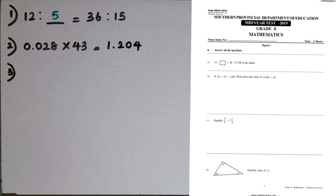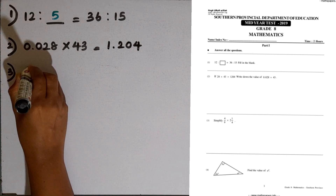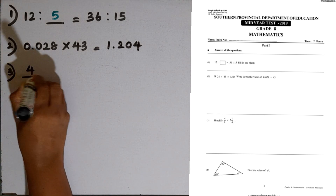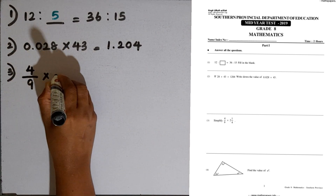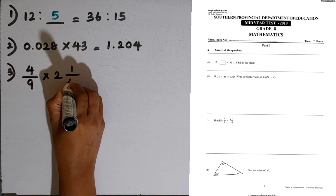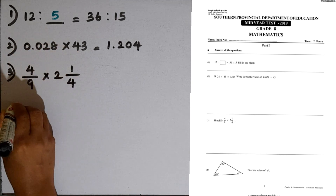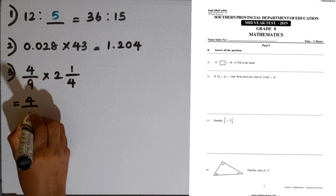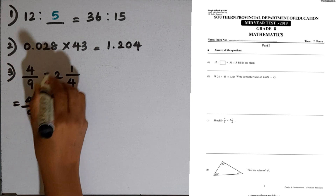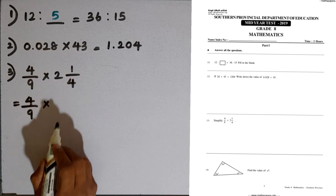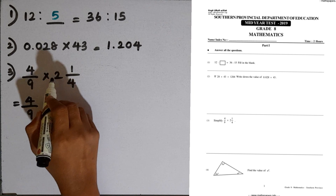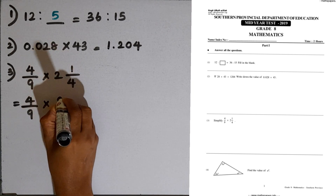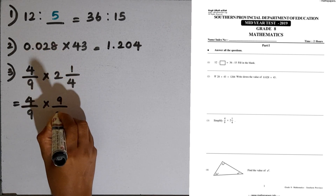Question number 3: we are given the ratio 4 over 9, multiplied by 2 and 1 over 4. We have to convert this mixed number into an improper fraction. 4 times 2 is 8, 8 plus 1 is 9, giving us 9 over 4.